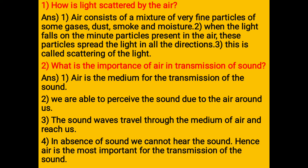How is light scattered by the air? Air consists of a mixture of very fine particles of some gases, dust, smoke and moisture. When light falls on the minute particles present in the air, these particles spread the light in all directions. This is called scattering of light.